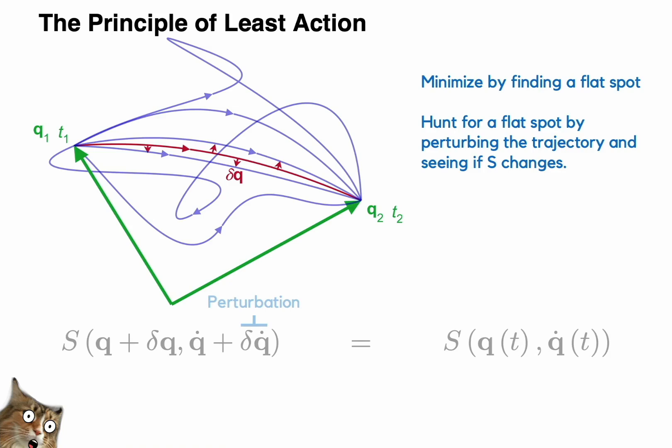When we talk about extremizing a functional, we are really talking about finding a flat spot, a trajectory, a function of q that gives us the same value of s for any tiny perturbation. Think of a ball at the bottom of a hill. You know that you are at the bottom because if you push the ball a little bit back up the hill, it will roll back down to the same spot. Mathematically, we are going to write this like so. Here, delta q is a small arbitrary push applied to each point of q and q dot. If this push doesn't change the action, then we know q and q dot are the correct solution, at least according to Leibniz. Okay, so how do we actually find q? Well, we are going to use an incredibly useful mathematical tool called the calculus of variations.